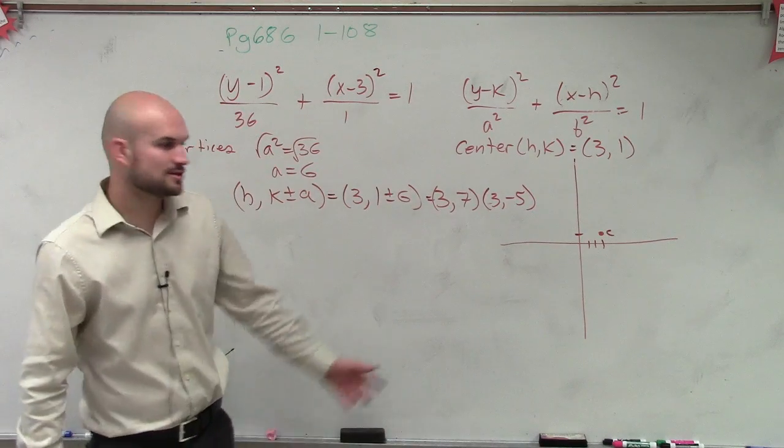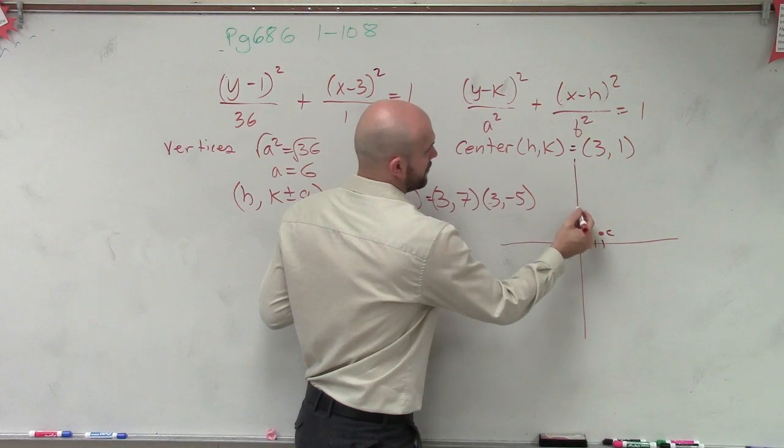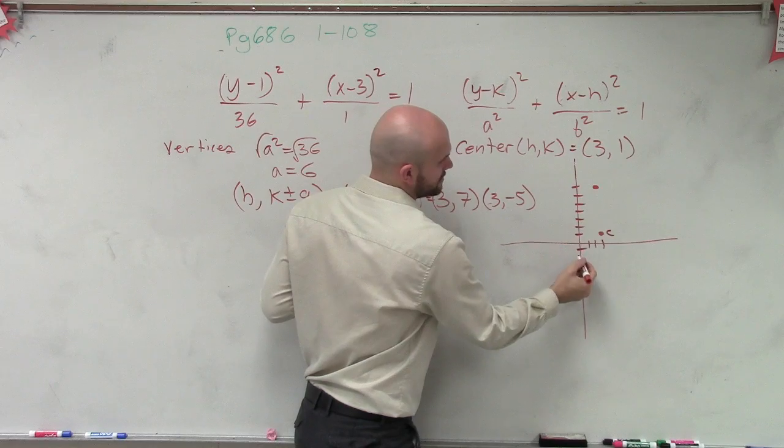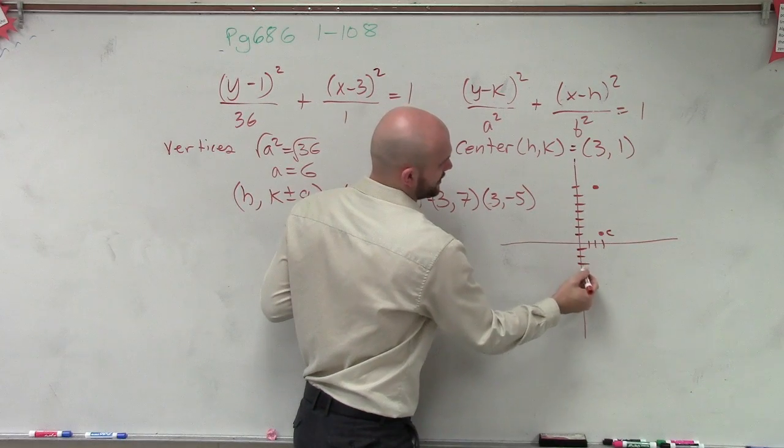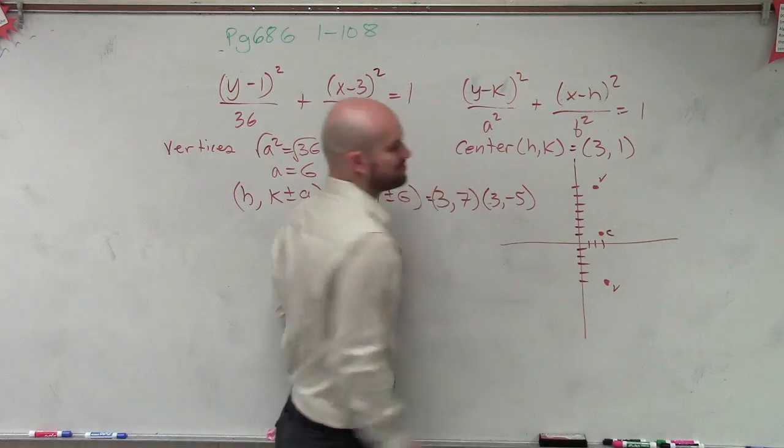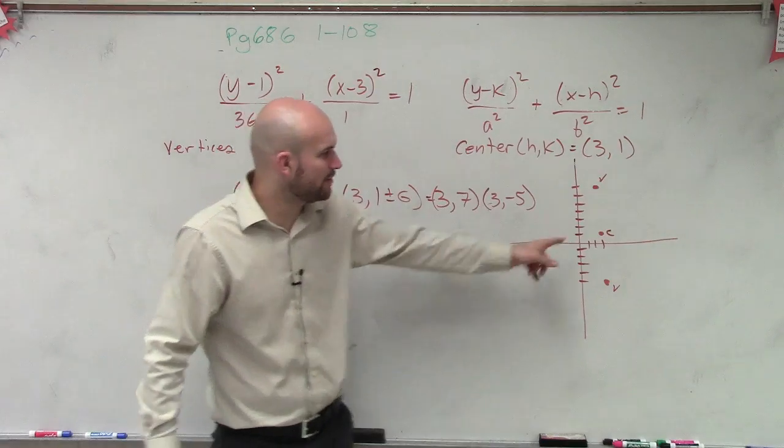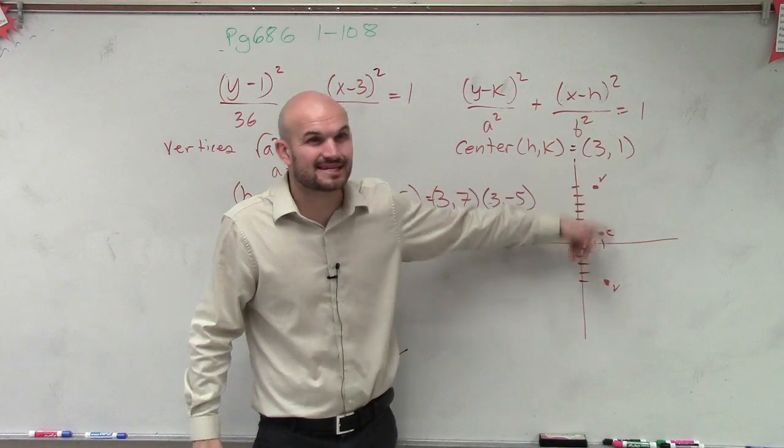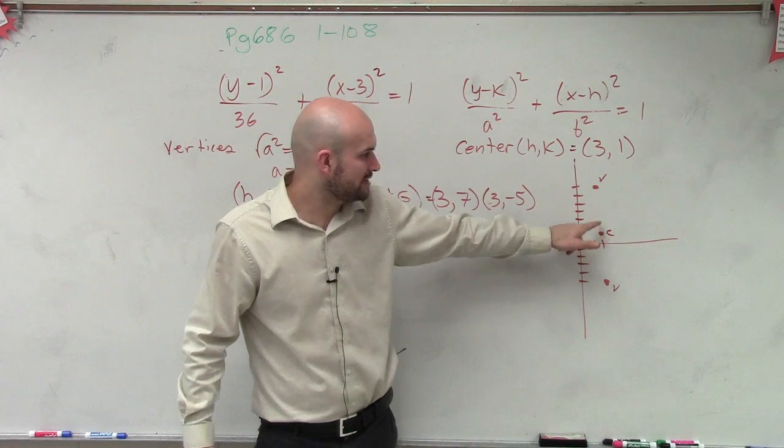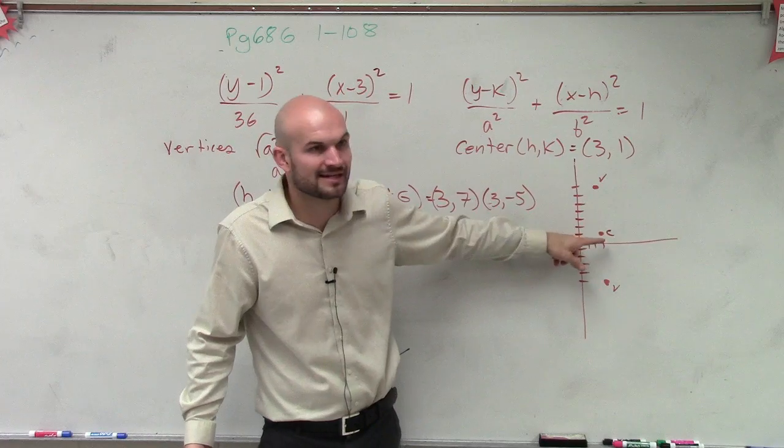Alright? And let's look at that. Let's plot those points. So over three, up seven. One, two, three, four, five, six, seven. Down five. One, two, three, four, five. So what I've done is now just plotted my two vertices. The other way you guys could do this is you know that from the center to the next vertices is six units, right? So you could just go to the center and add six. One, two, three, four, five, six. And you get to your vertices. Or then just subtract six. One, two, three, four, five, six, right?